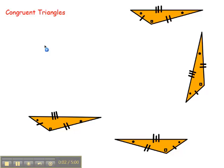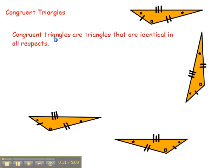This video is about congruent triangles. The four triangles on this page are all congruent. But what does that mean? Well, what it means is that they are identical in all respects.